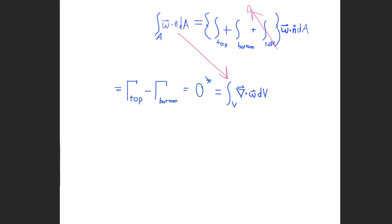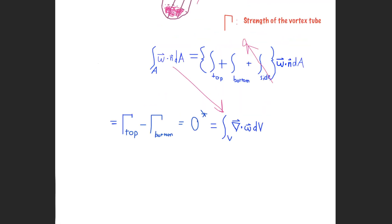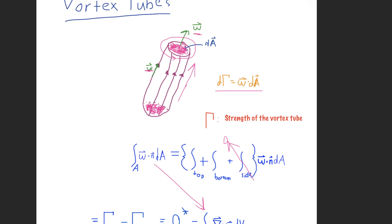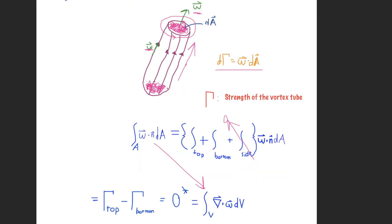So this surface integral of the vorticity through some surface area component is equivalent to the volume integral of the divergence of the vorticity. And that is inside of this volume here, this defined enclosed section of our vortex tube.